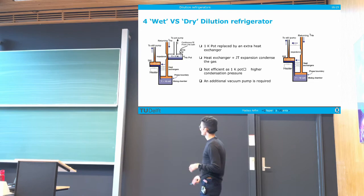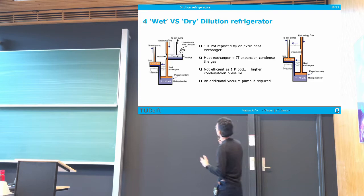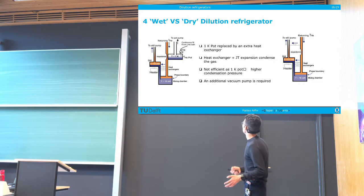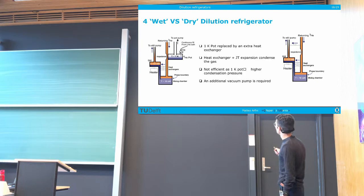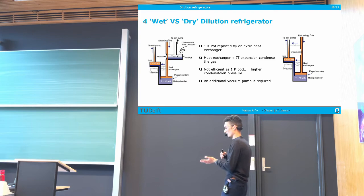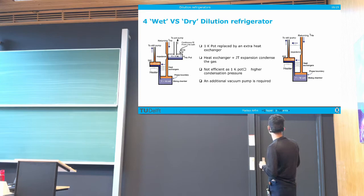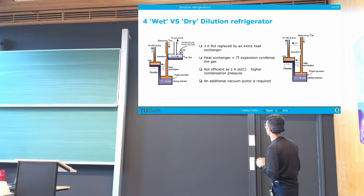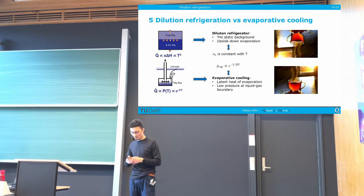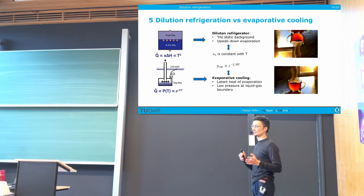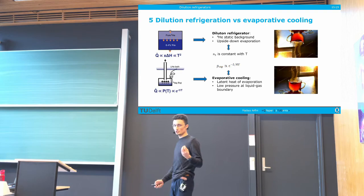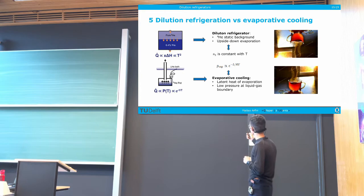Until now I've talked about using the 1-Kelvin pot to condense helium-3, but we can actually do this in a dry way. Instead of using the 1-Kelvin pot, we use a heat exchanger plus a Joule-Thomson valve, which performs a Joule-Thomson expansion — a specific kind of expansion that cools the gas without needing liquid helium. If we use a dry refrigerator instead of a wet refrigerator, we need an additional vacuum pump system because the condensation pressure is much higher.